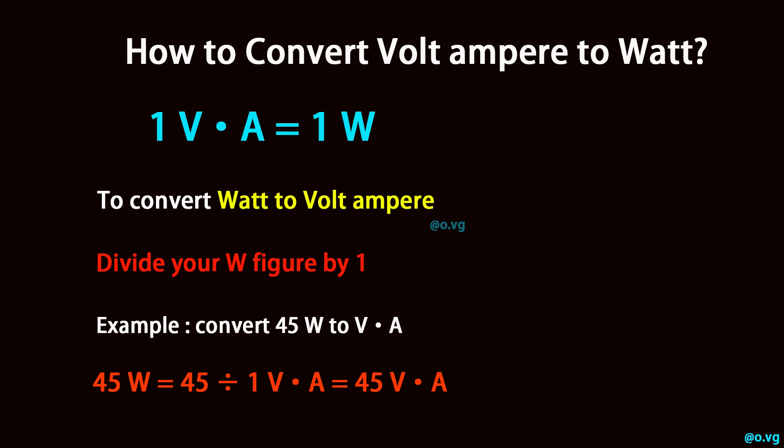To convert watt to volt-ampere, divide your watt figure by 1. Convert 45 watt to volt-ampere: 45 divided by 1 volt-ampere equals 45 volt-ampere.